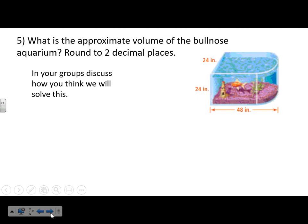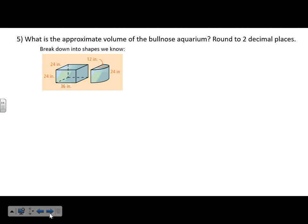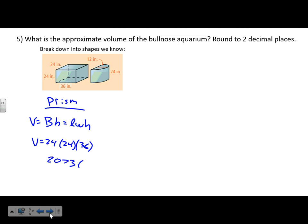Here's a story problem from the textbook: what is the approximate volume of the Bullnose Aquarium, rounded to two decimal places? A Bullnose Aquarium has a rounded hemisphere on one end. We break it into two shapes: a rectangular prism and a half-cylinder. The volume of the prism is 24 × 24 × 36 = 20,736 cubic inches.